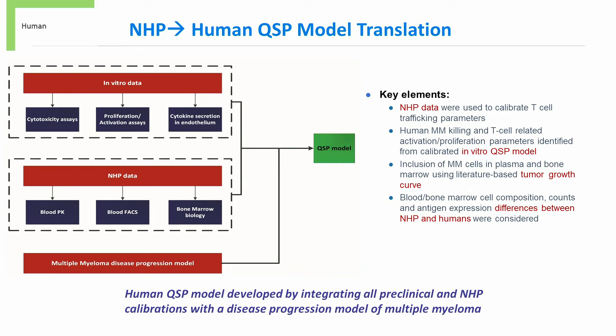We then translated the NHP model to a human QSP model. Following integration of the prior in vitro and NHP model calibrations, it was updated to include a multiple myeloma disease progression submodule. Multiple myeloma cells were added to both the blood and bone marrow and we implemented a literature-based tumor growth function. Finally, we adjusted the blood and bone marrow cell composition, counts, and antigen expression levels based upon differences between species.